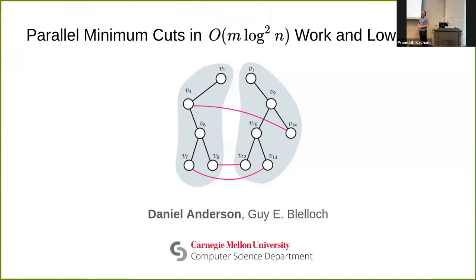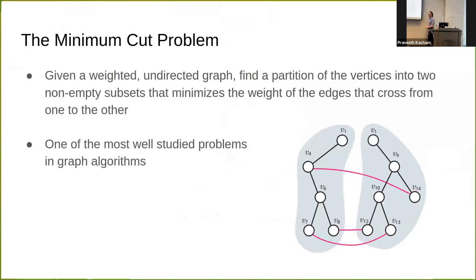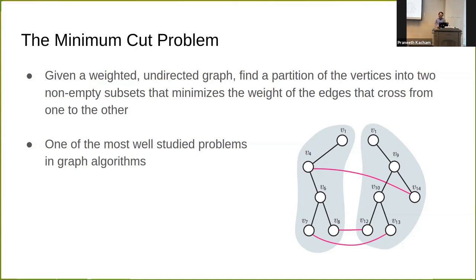Hello everyone, we're talking about some recent exciting work on parallel minimum cuts. I'm Daniel, and this is joint work with my advisor. So you're probably familiar with the minimum cut problem — the global minimum cut problem says we're given a weighted undirected graph, and we'd like to divide the vertices up into two non-empty subsets such that we minimize the total weight of edges crossing from one half to the other. This is one of the most well-studied problems in graph theory, with algorithms going back many years.